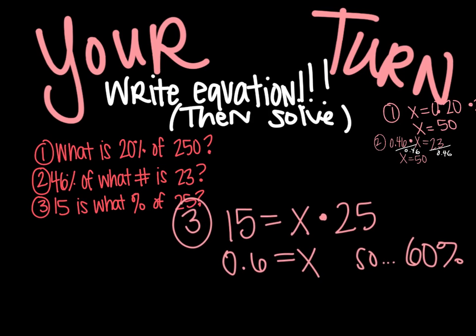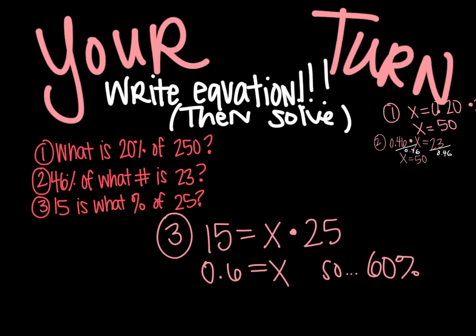And last but not least, number 3, 15 equals x times 25. To get x by itself, you have to divide by 25 on both sides. When you do that, you get a decimal for an answer. However, it's asking for a percent, so you have to move it, move it. You get 60% for your answer. And then, again, you want to self-check. 15 is what percent of 25? So my fraction is 15 out of 25, and that would be over half because 12.5 would be 50%. So it's a little bit over, so my answer makes sense.